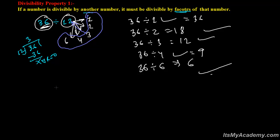Similarly, take 54. We know 54 is divisible by 9 — 9 times 6 is 54. The factors of 9 are 1 and 3. So 54 must also be divisible by 3.